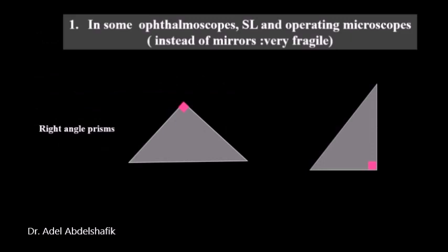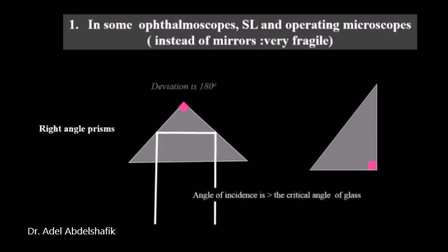Using right angle prism when placed in a suitable way, we can change direction of rays 90 or 180 degrees. Hence prism can replace mirrors in some of the instruments.